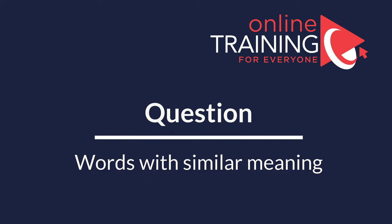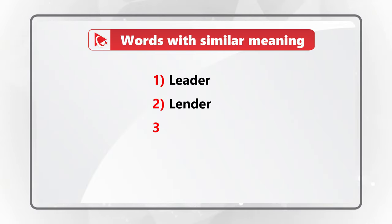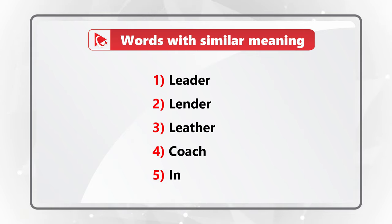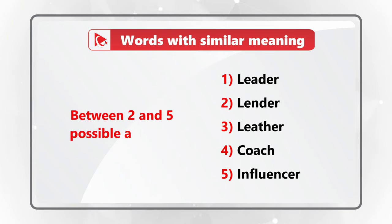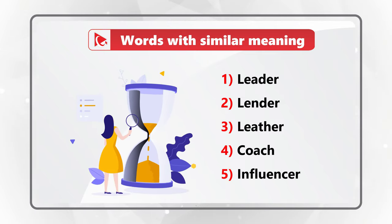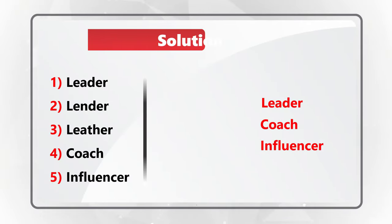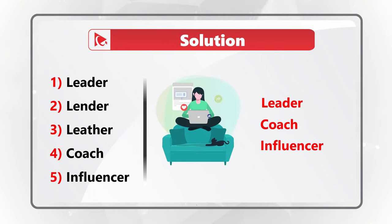I love this question because it uses your brain power and also allows you to improve your English vocabulary. You need to identify all the words with similar meanings. The words are: leader, lender, leather, coach, and influencer. Keep in mind there could be between two and five words in the answer. Some words sound similar but represent very different meanings. The similar words, as I see them, are leader, coach, and influencer.